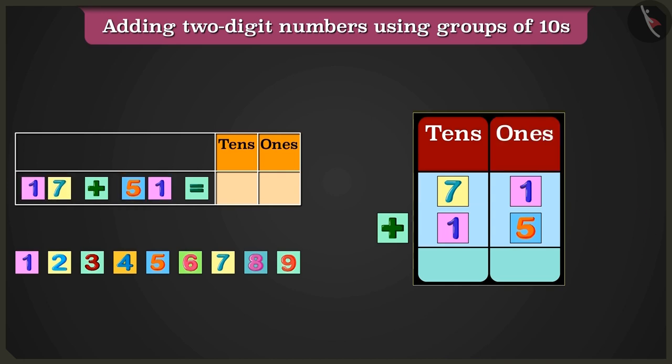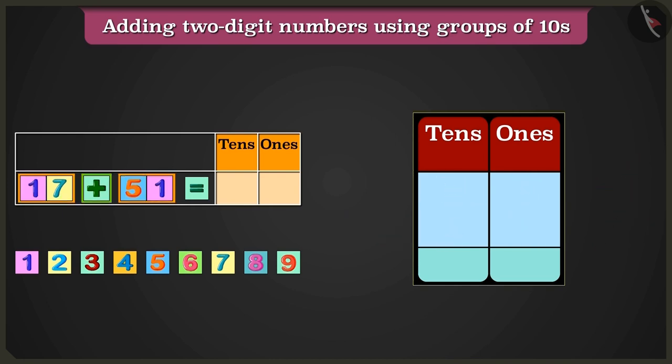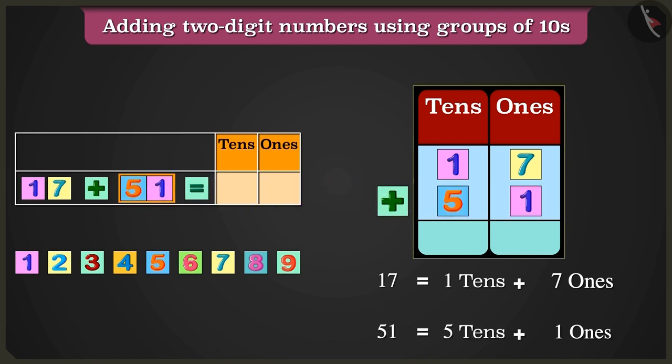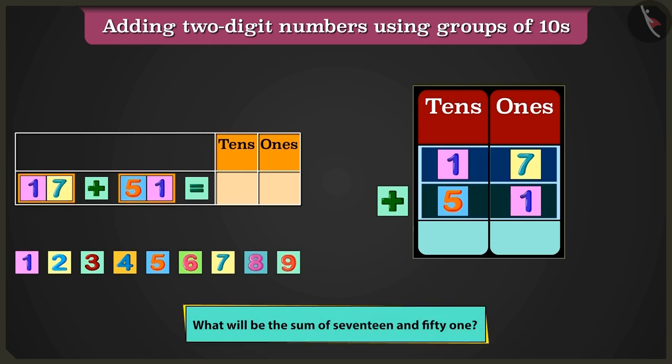Hey Greeny, not like this. Let me explain. We have to add 17 and 51. So, 17 that is 1 ten and 7 ones along with 51 that are 5 tens and 1 one. Now, can you tell me what will 17 and 51 add up to?